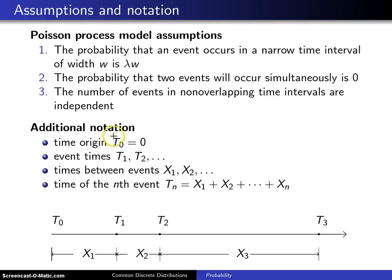Here's some additional notation. Some authors like to set the origin at zero, and they call that time T0. The event times are T1, T2, T3, etc.